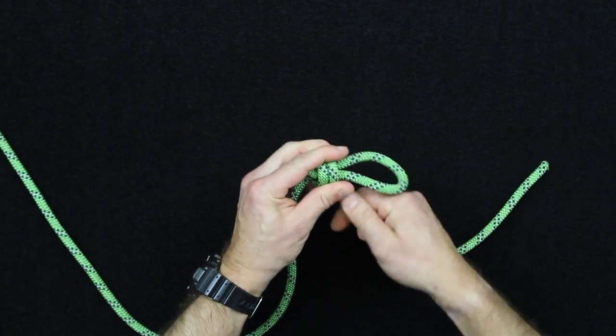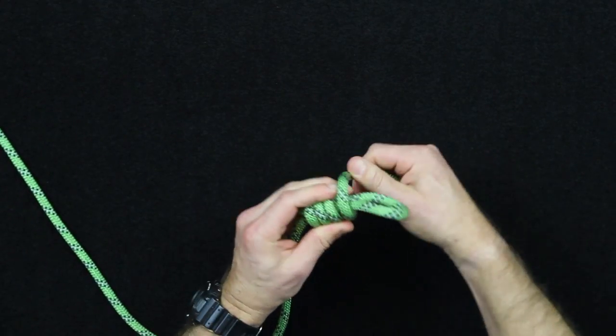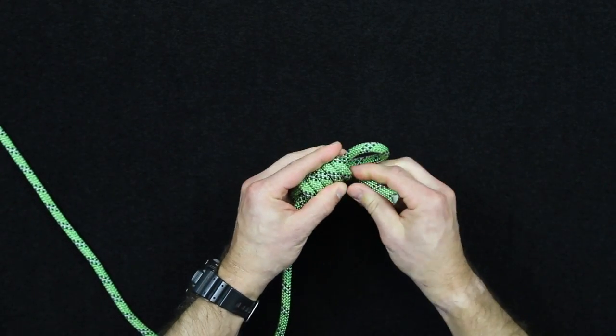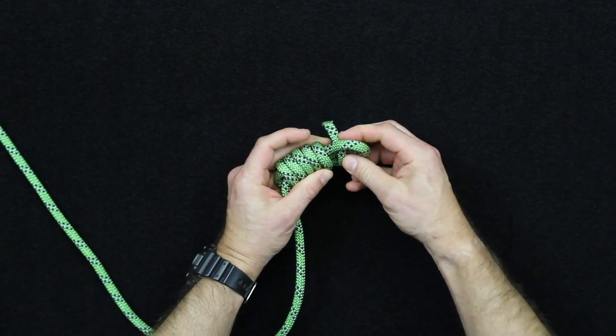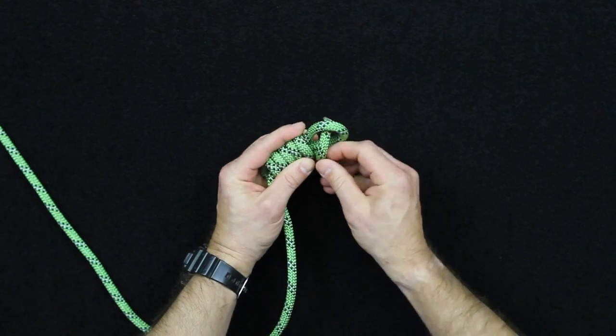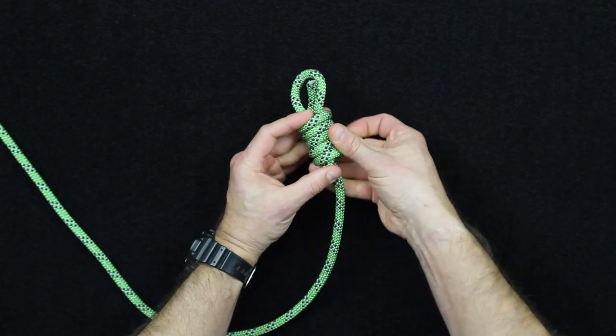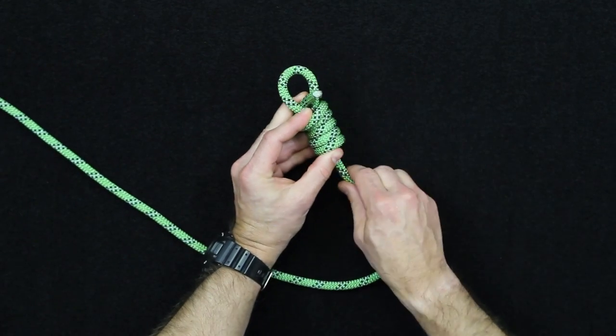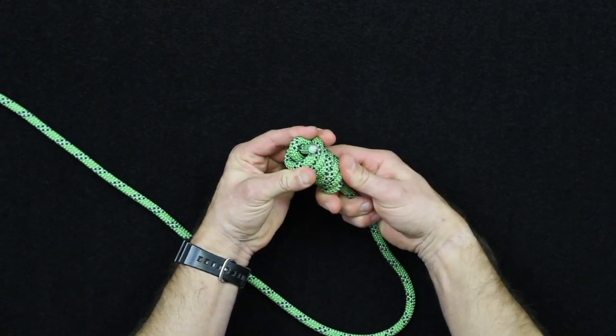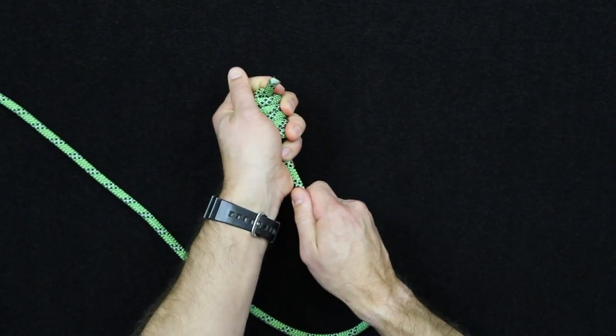You're going to continue to wrap up towards the edge of the bite there, or the tip of the bite, until you get around five wraps in there. Then you're going to put the working end through that bite. And then you're going to come around to the standing part of the line down here, and you're just going to pull this through until you get this.